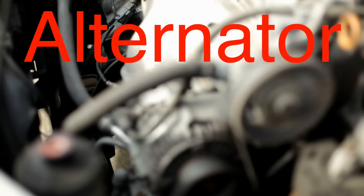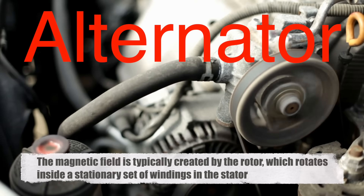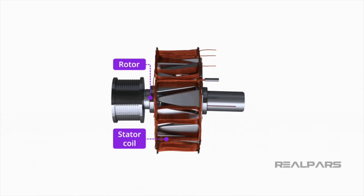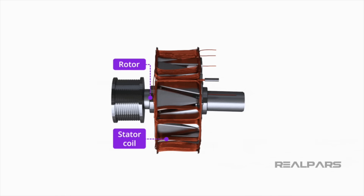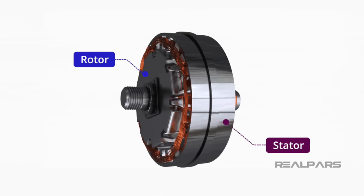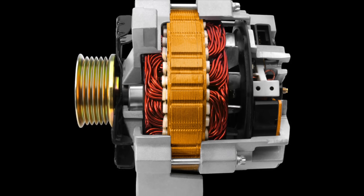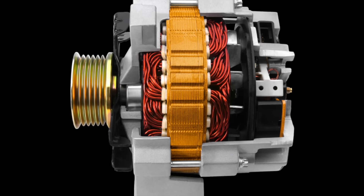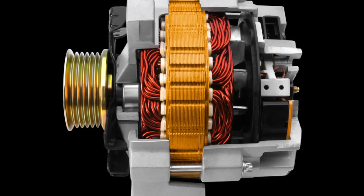Alternators use a different approach. In an alternator, the magnetic field is created by the rotor, which rotates inside a stationary set of windings in the stator. Because the stator does not move, the need for brushes and a commutator is eliminated, making alternators more reliable and reducing maintenance requirements. Additionally, alternators can be designed to produce a higher output in a more compact form factor, which is another reason they are favored in automotive and other mobile applications.